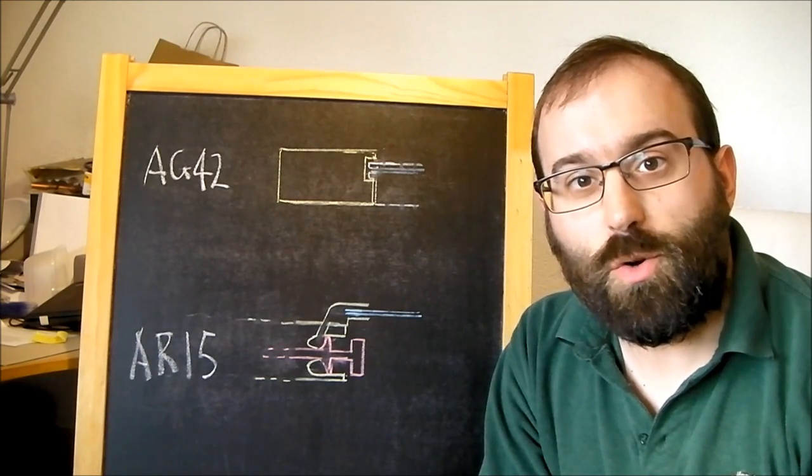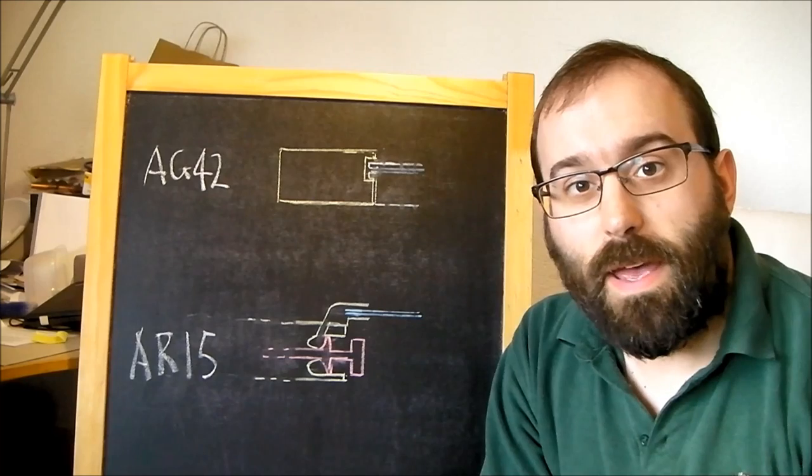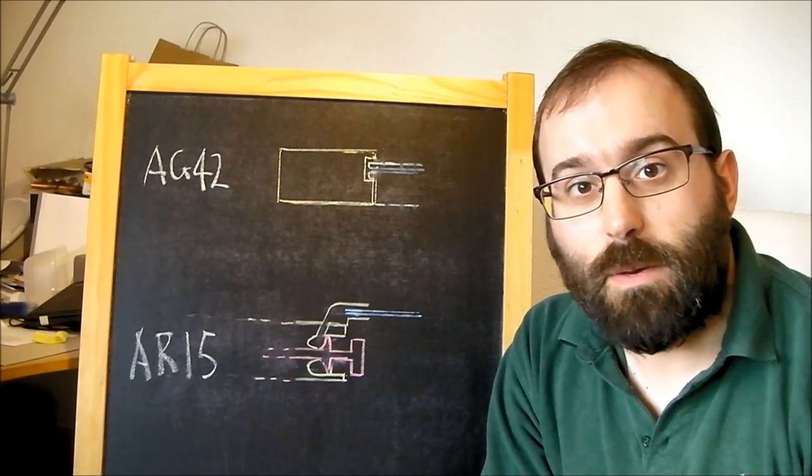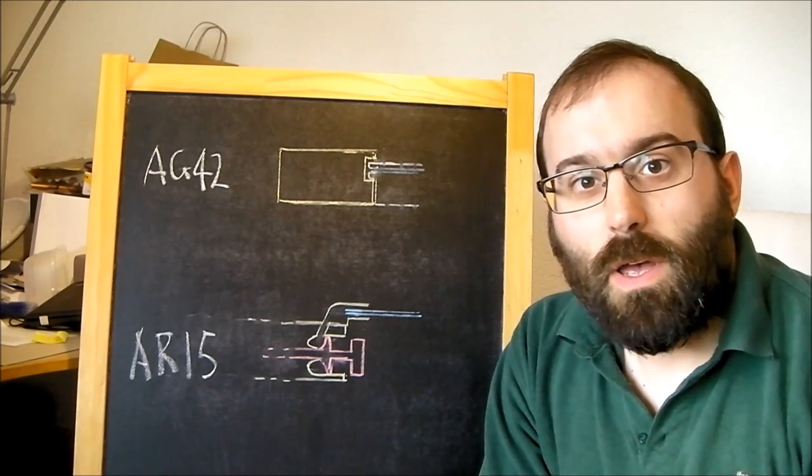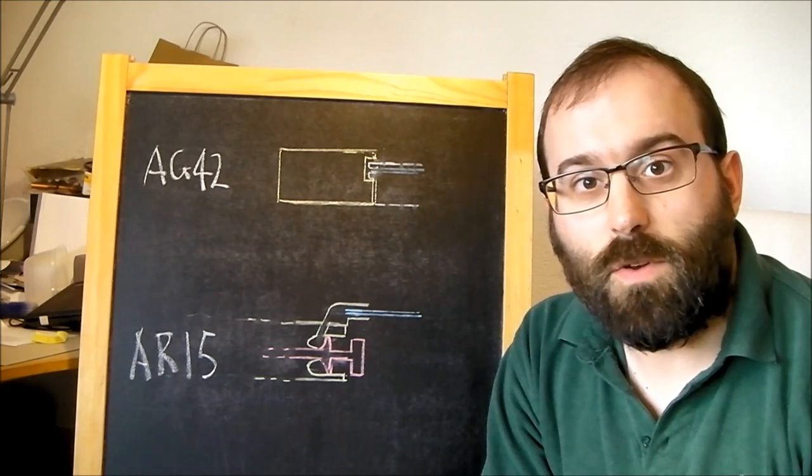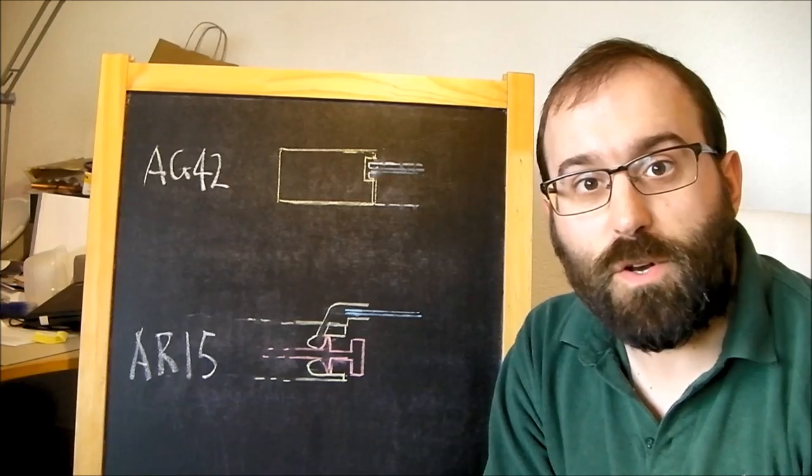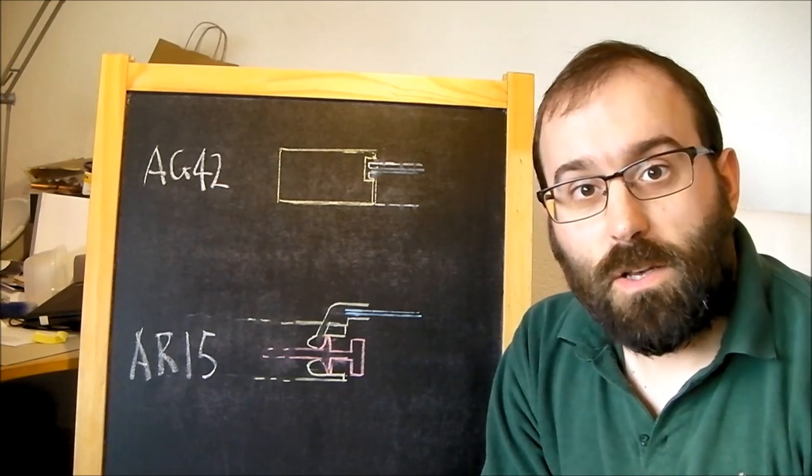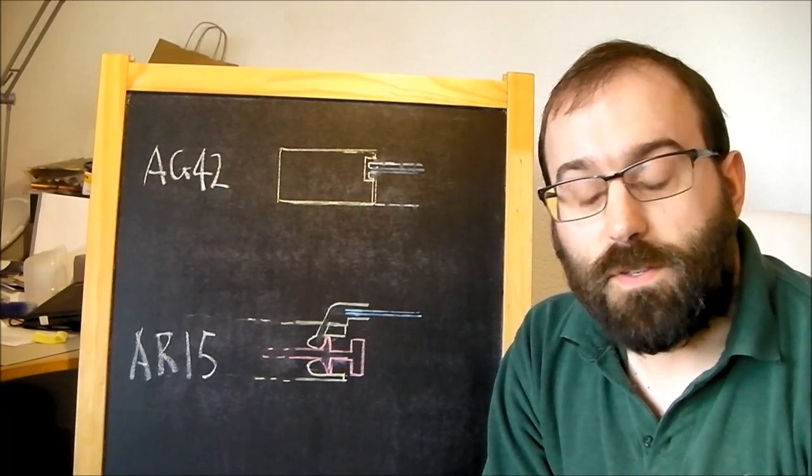Hello and welcome to another technical short on Bloke on the Range. Today we're looking at a commonly held misconception that the Stoner AR-15 type gas system is just a copy of the earlier system used on the Ljungman AG-42, various French rifles and so on. So let's take a quick look at the differences.